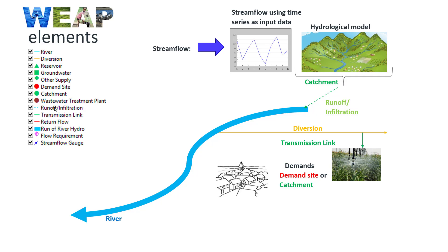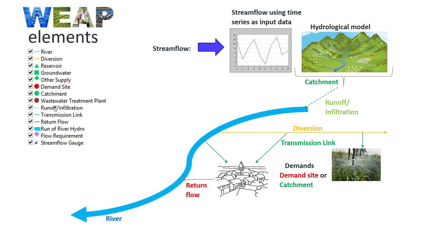In many cases these demands have several supply points. In this example, the population demand has two supply points: one from the diversion and another one from the river. In general, the demand sites do not consume 100% of what they draw from the water supply — there is a water discharge. Then we need to add a return flow element. We can locate it downstream or to any other source already included in the model.